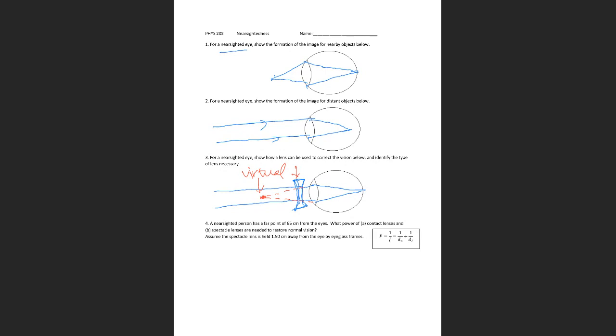That's a virtual image by the corrective lens. Then, of course, that becomes the object for the eye, and the eye forms a real image on the back of the retina.